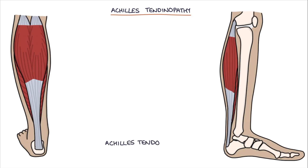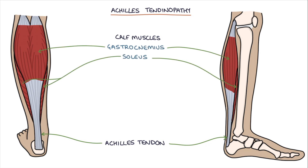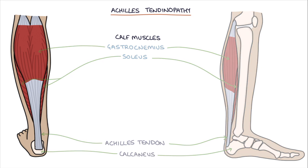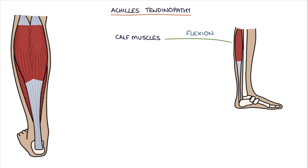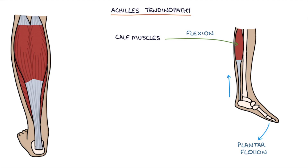The Achilles tendon connects the calf muscles — specifically the gastrocnemius and soleus muscles — to the heel of the foot, specifically the calcaneus bone. Flexion of the calf muscles pulls on the Achilles and causes plantar flexion of the ankle, causing the foot to move in a downward direction.